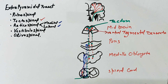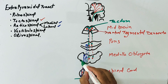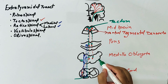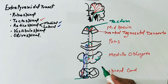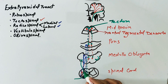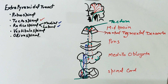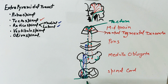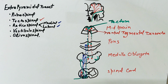The olivospinal tract arises from the inferior olivary nucleus, which is located in the medulla. From the inferior olivary nucleus, fibers cross and go to the anterior side. This is the olivospinal tract. From here, nerve fibers synapse with the anterior horn cells of the spinal cord. So this is all about the extrapyramidal tracts.